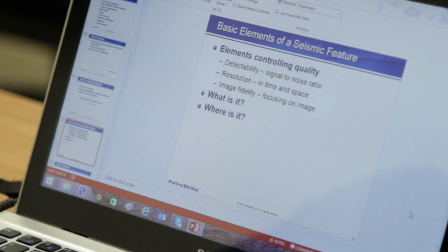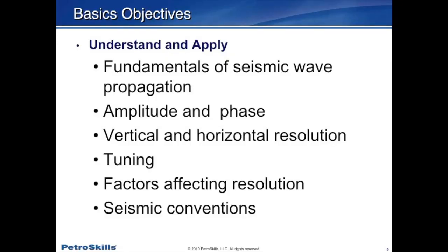The other thing we have to worry about is image fidelity — essentially, can we focus in on the image we're trying to see. The two main questions as an interpreter you're going to ask yourself are: what is it and where is it? Through that we're going to try to understand some of the fundamentals of seismic wave propagation — things like amplitude and phase, how do we determine vertical and horizontal resolution, a term called tuning which controls our ability to resolve what we see in the seismic data, and some of the factors that affect seismic resolution.